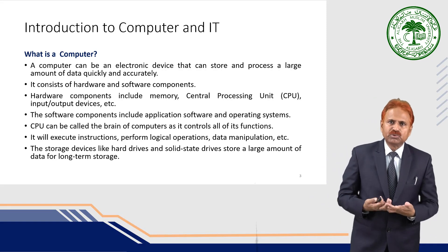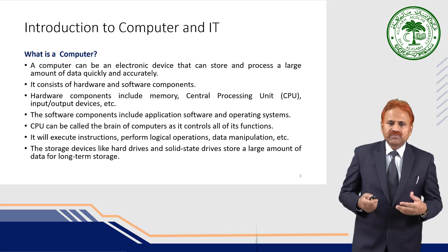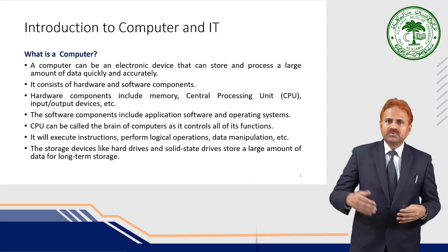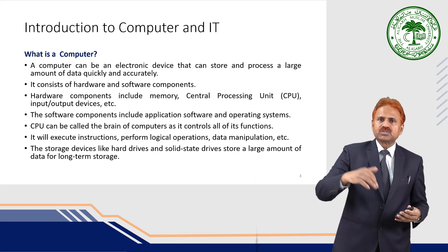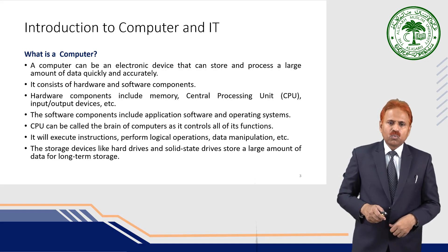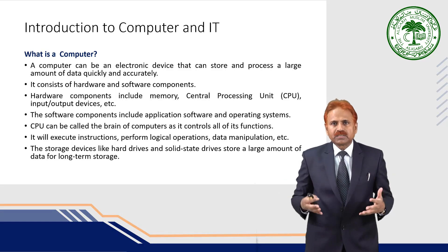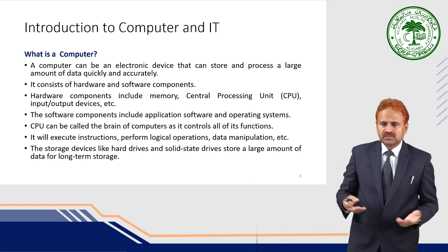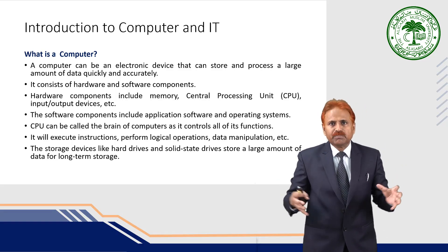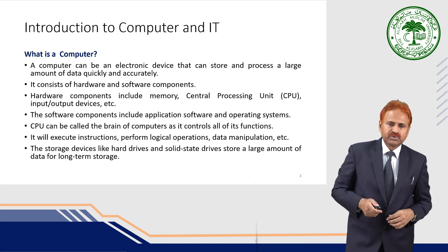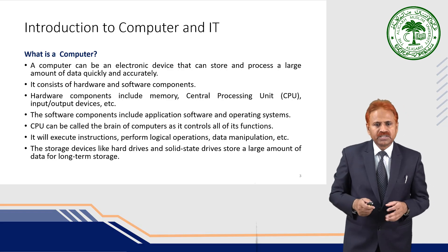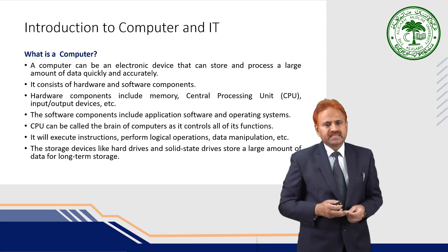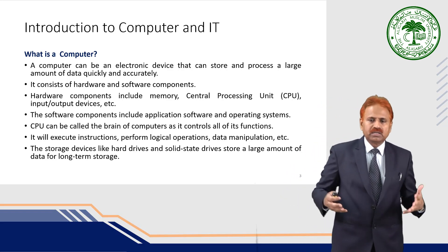Computers consist of two main components: hardware and software. Hardware components include all the physical parts of the computer like memory, CPU, and input and output devices — things we can touch, see, and repair in case of damage. Software components include application and programming parts, programs installed in the computer, such as application programs, system programs, and utility programs, which make the hardware usable. These are known as software components.